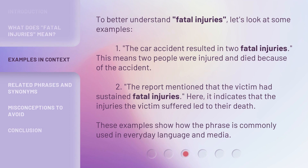To better understand 'fatal injuries,' let's look at some examples. 1. 'The car accident resulted in two fatal injuries.' This means two people were injured and died because of the accident. 2. 'The report mentioned that the victim had sustained fatal injuries.' Here, it indicates that the injuries the victim suffered led to their death. These examples show how the phrase is commonly used in everyday language and media.